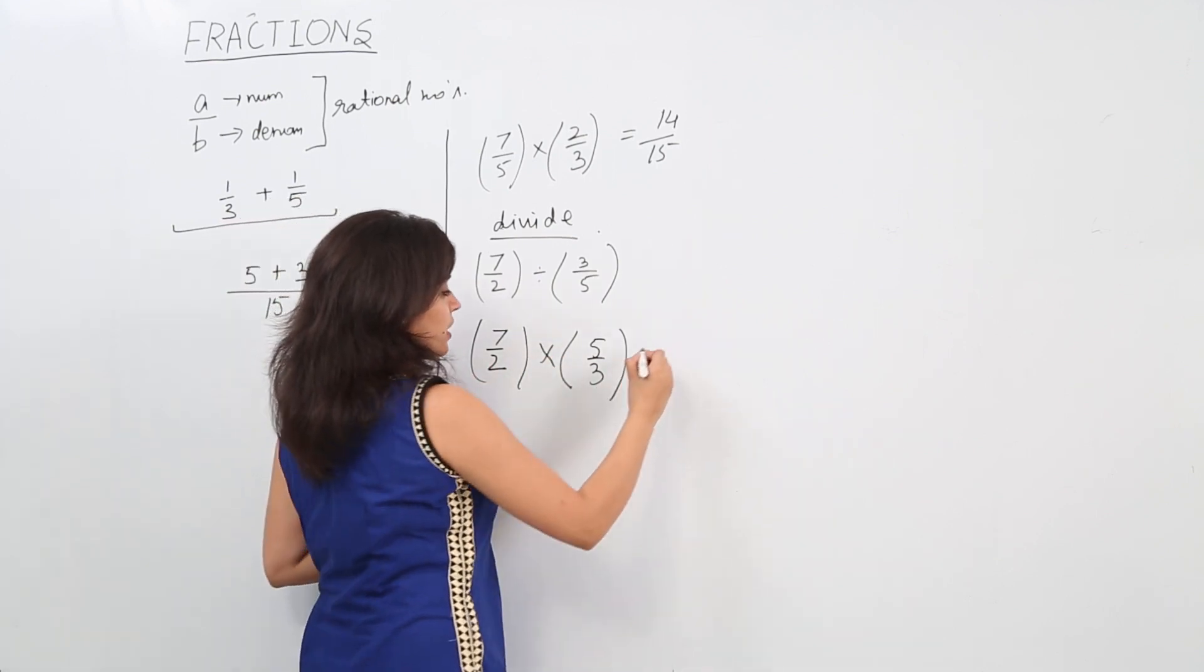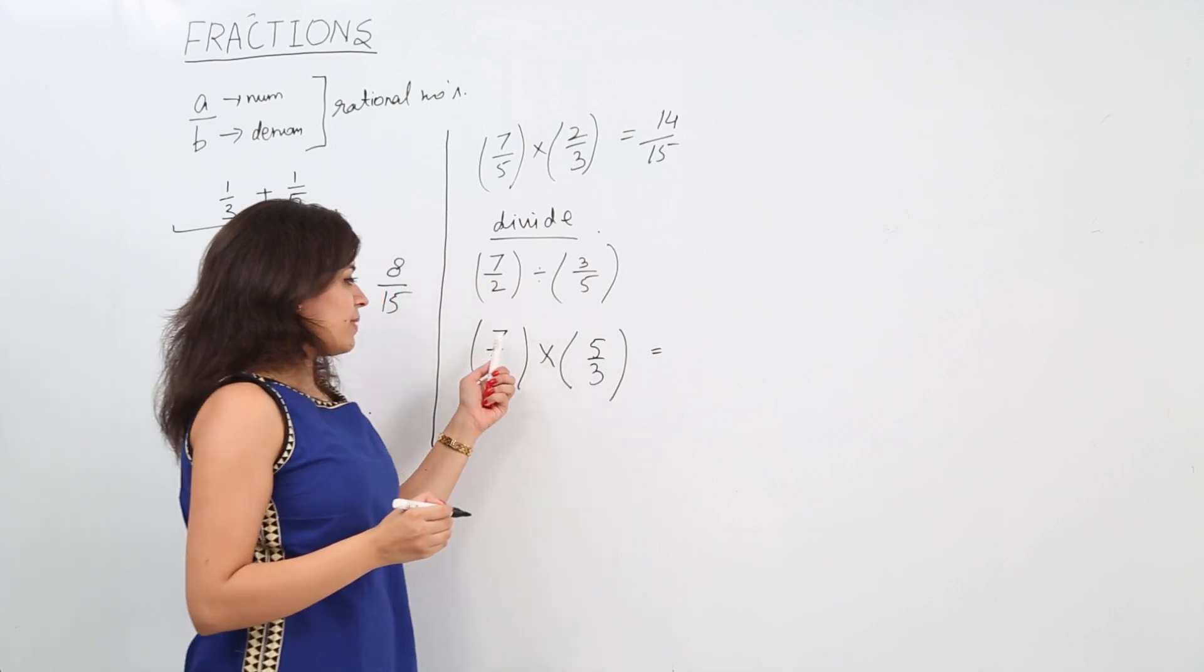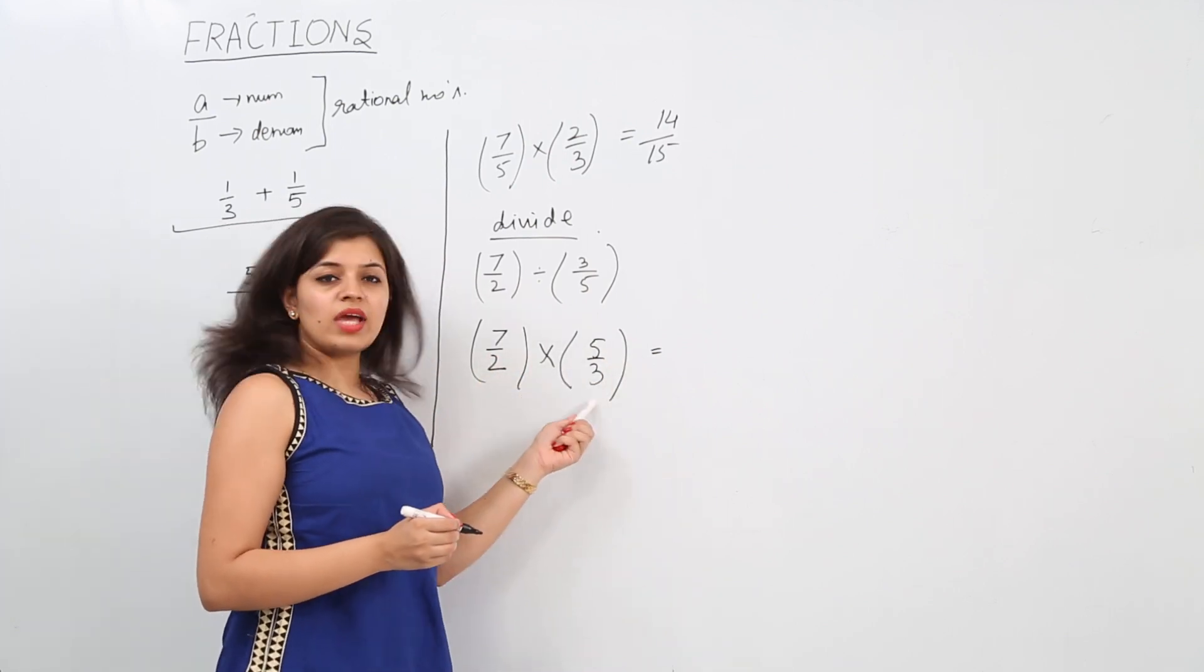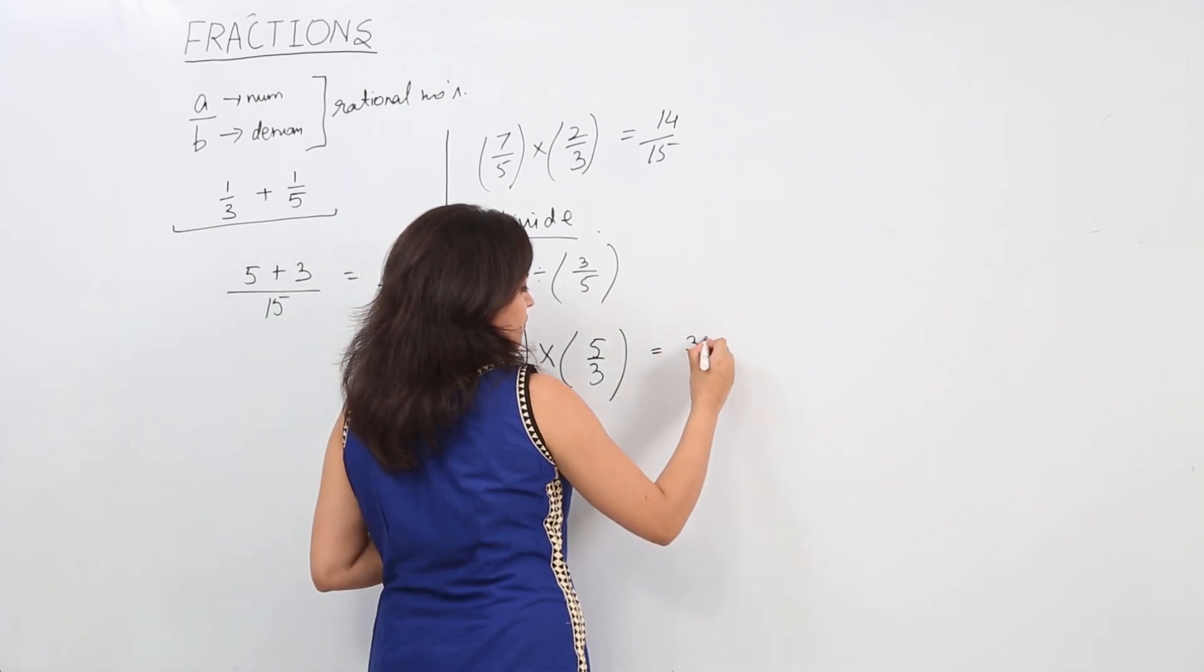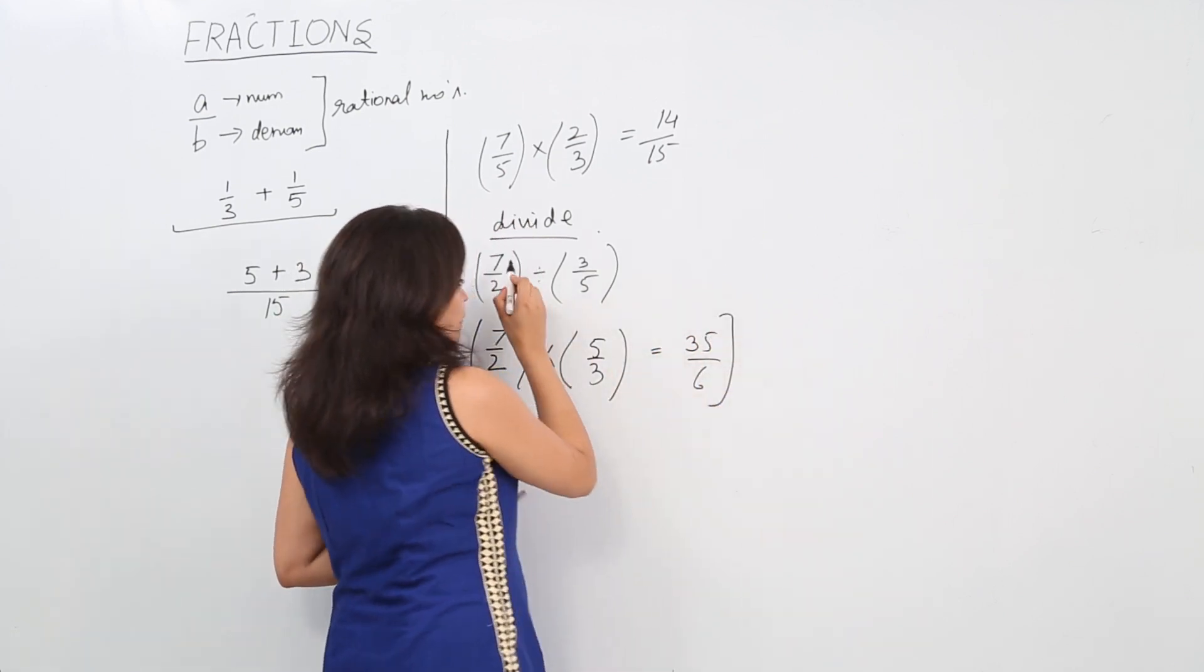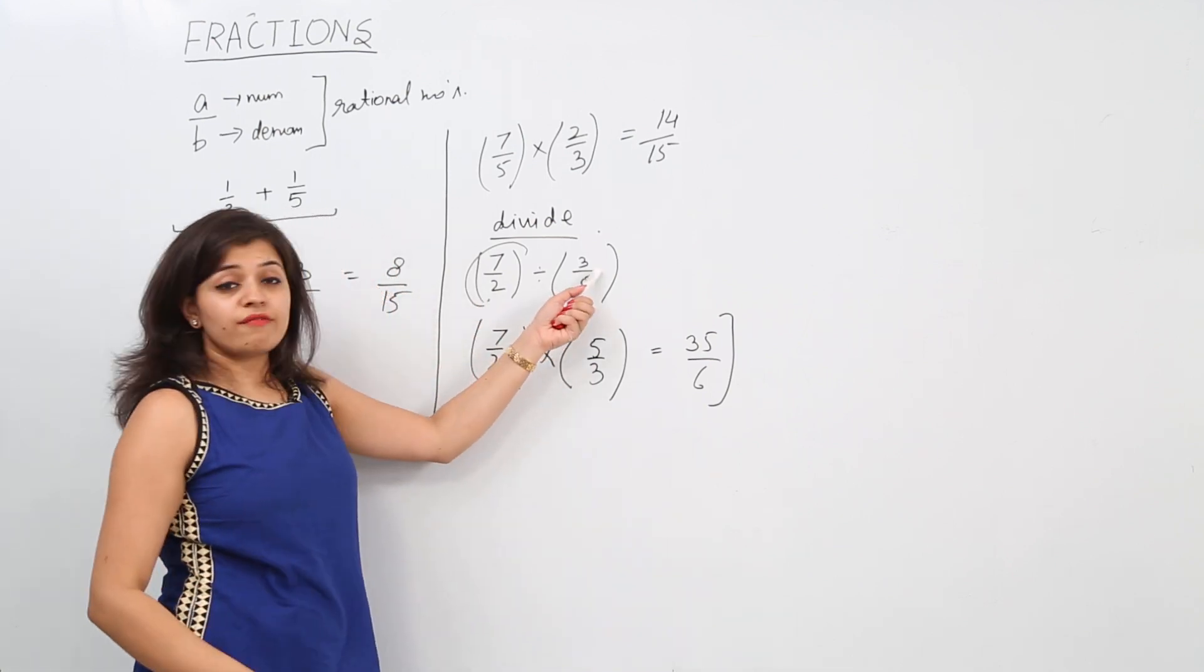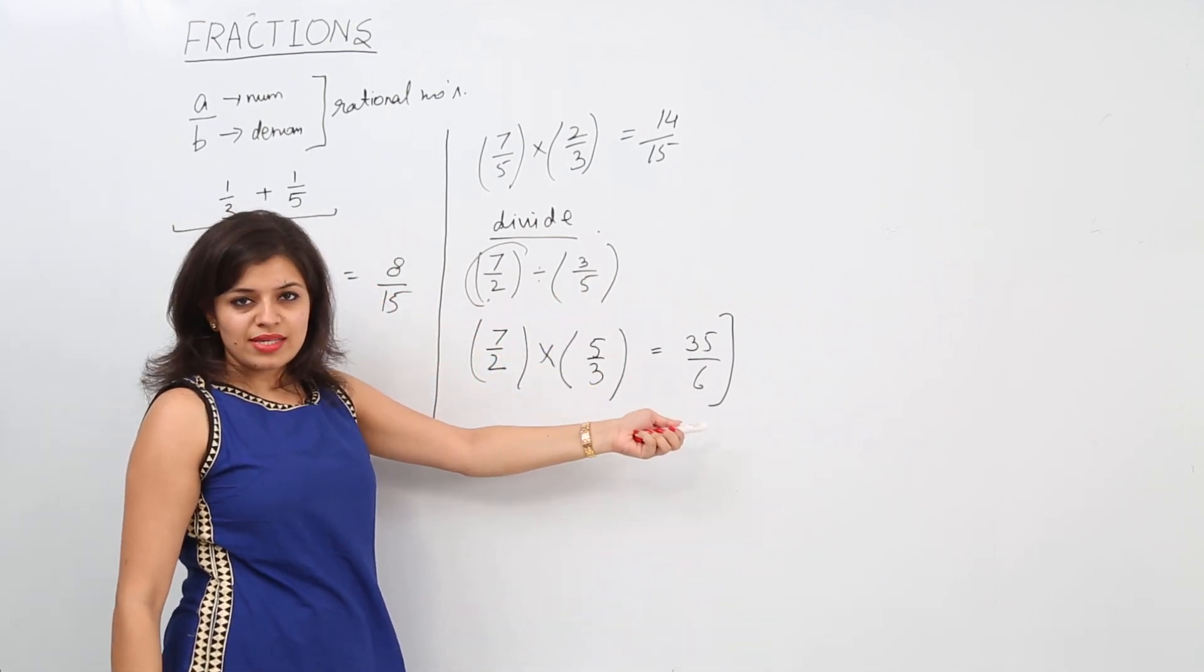So in this case, now we can simply multiply 7 by 5 and 2 by 3 as we have already seen earlier. So 7 into 5 is 35 and 3 into 2 is 6. So if we divide 7 by 2 by 3 by 5, the answer is 35 by 6.